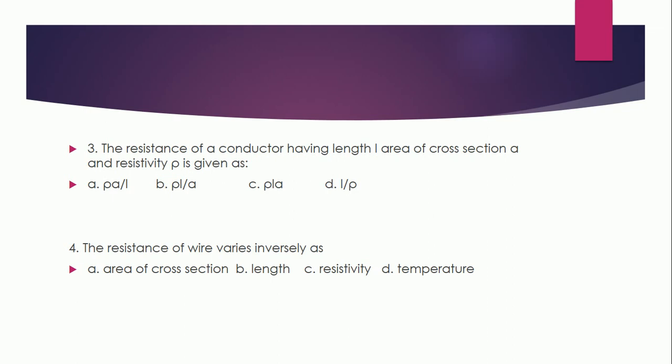The resistance of a conductor having length L, area of cross section A, and resistivity Rho is given as: Rho A by L, Rho L by A, or L by Rho? The correct answer is B — Rho L by A. The resistance of a wire varies inversely as: area of cross section A, length, resistivity, or temperature? Correct answer is A — area of cross section.